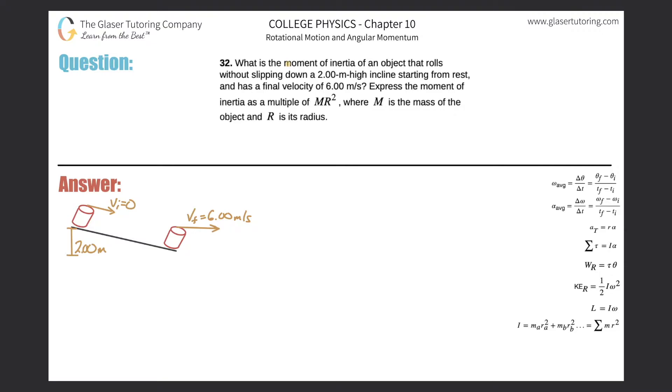Number 32: What is the moment of inertia of an object that rolls without slipping down a two meter high incline starting from rest and has a final velocity of six meters per second? Express the moment of inertia as a multiple of mr² where m is the mass and r is the radius. We don't know what object it is.